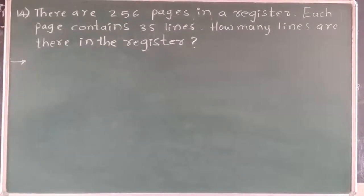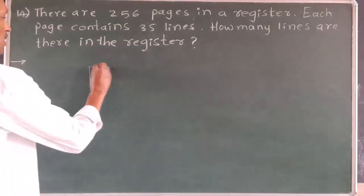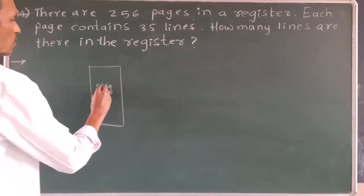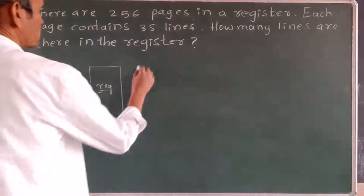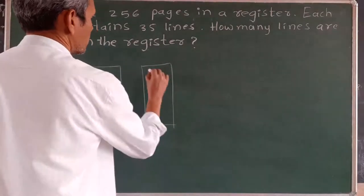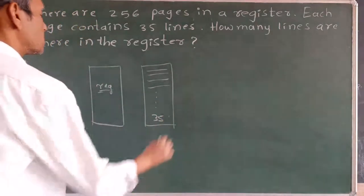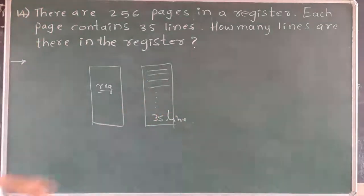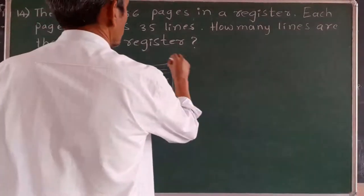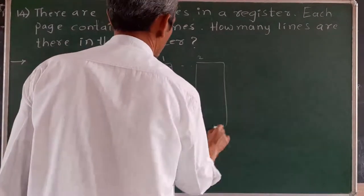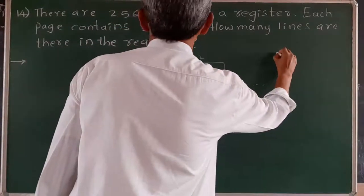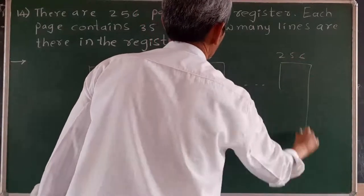Now we solve the 14th word problem. There are 256 pages in a register. Each page contains 35 lines. How many lines are there in the register? That is, in one register, each page contains 35 lines. How many pages are there totally? 256 pages.